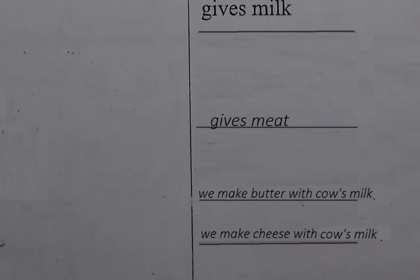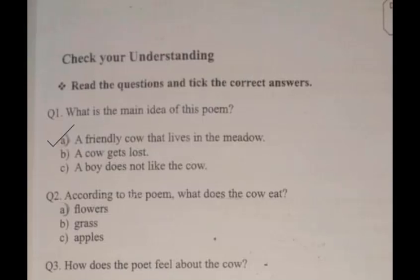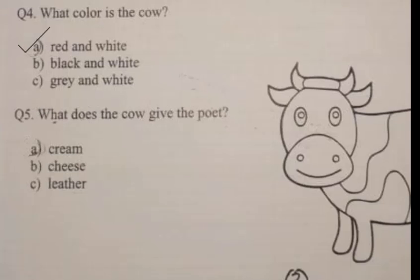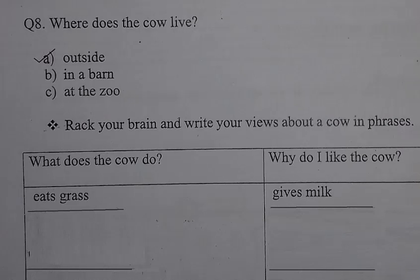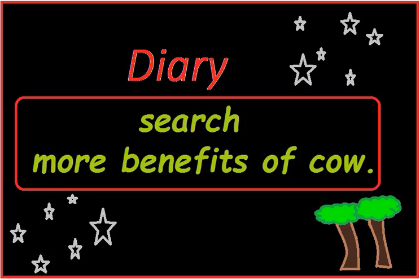Now write one more phrase: 'We make cheese with cow's milk.' W-E, M-A-K-E, C-H-E-E-S-E, with, C-O-W apostrophe S, M-I-L-K. Full stop. I'm sure you have done this. After this I am showing you a picture of today's lecture — take a screenshot of this page if you missed any word or line. Your diary homework is to search more benefits of the cow. That was today's lecture. Tomorrow we will learn more things. Take care, Allah Hafiz.